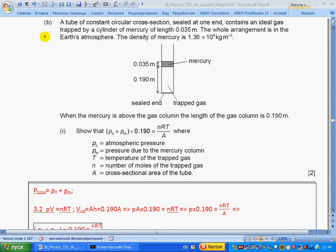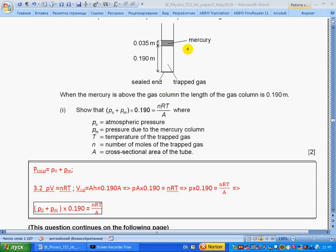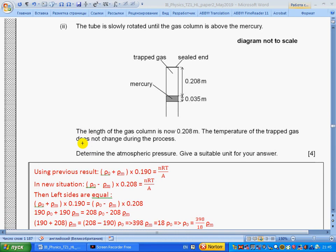Part b: A tube of constant circular cross-section sealed at one end contains an ideal gas trapped by a column of mercury. The whole arrangement is in Earth's atmosphere. The density of mercury is given. When the mercury is above the gas column, the length of the gas is 0.190 meters. Show that PV equals NRT. Total pressure will be atmospheric pressure plus pressure from this mercury produced by the column. Section 3.2: ideal gas equation PV equals NRT. Volume would be area by height, 0.198. Substituting this value, getting this formula, and recalling that pressure is total pressure, we get what they want.